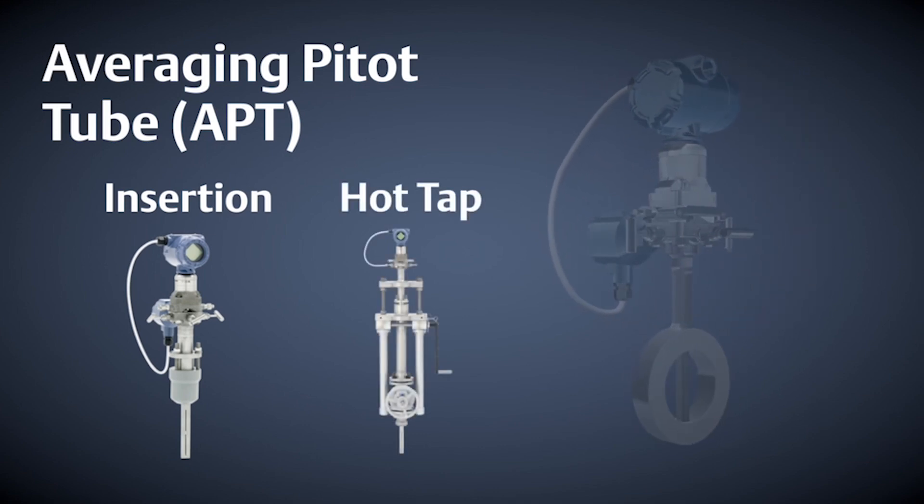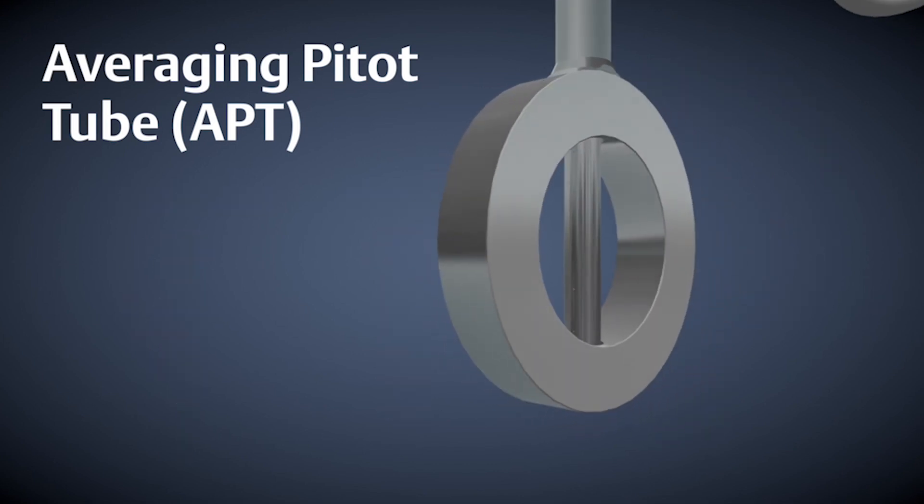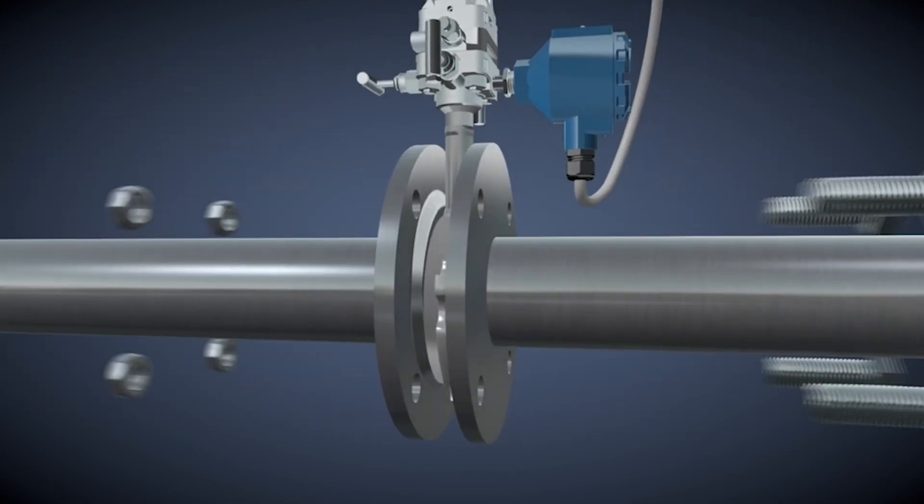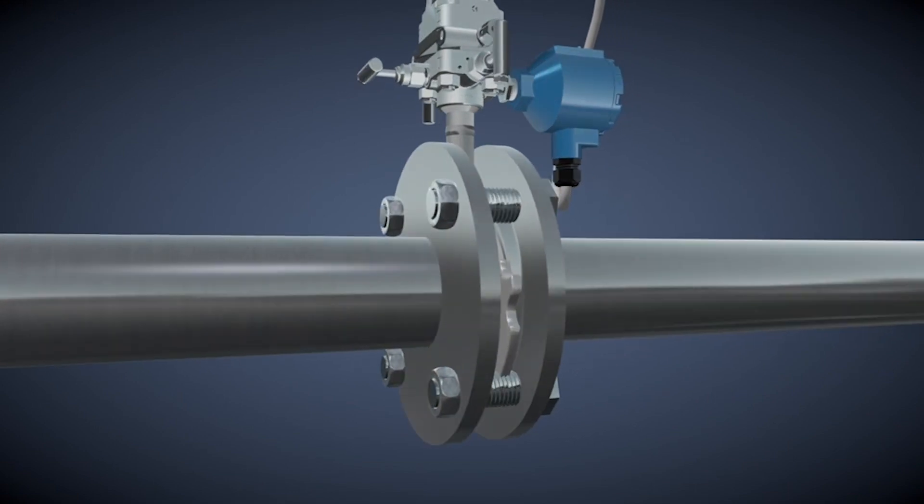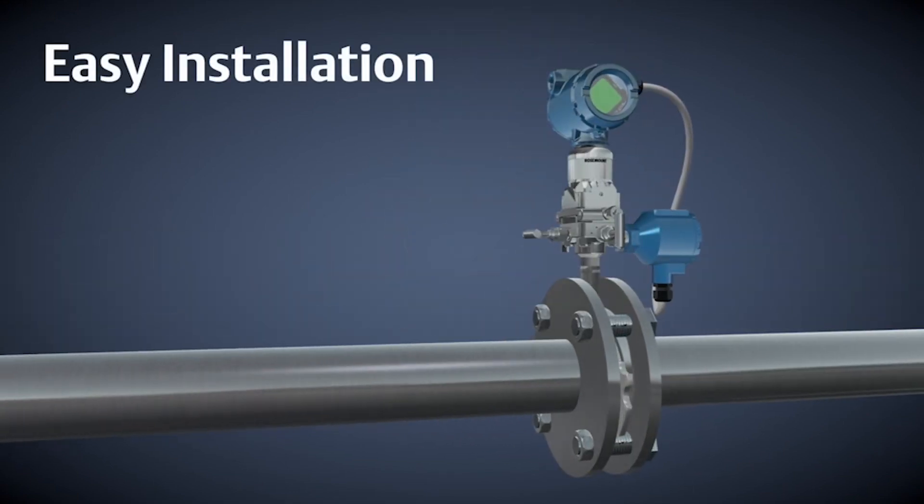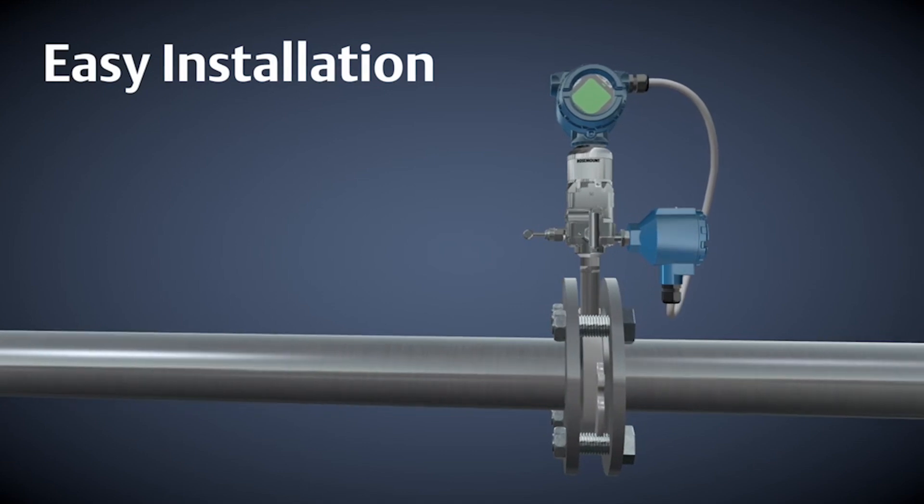Hot tap allows you to install the flow meter without interrupting the process, and the compact style, shown here, simply drops between any two raised-face flanges. This allows averaging pitot tube technology to be installed more easily than an orifice plate.